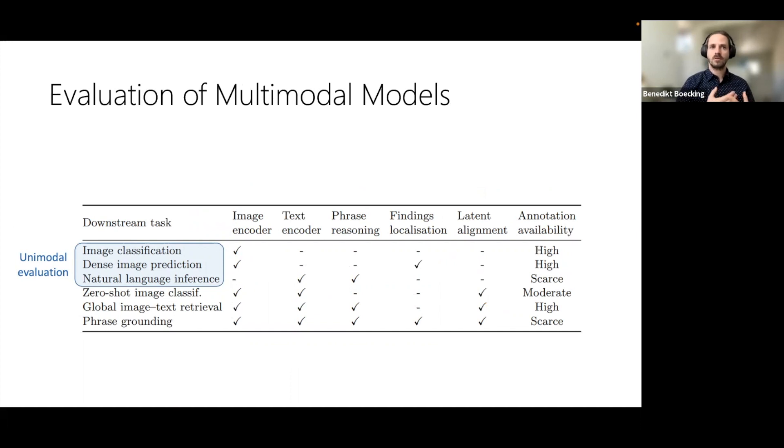But in order to truly check what our models learn and how well they learned, we have to test their local alignment in the joint space. And we therefore developed a radiology phrase grounding benchmark, which implicitly tests many aspects of joint image text understanding.